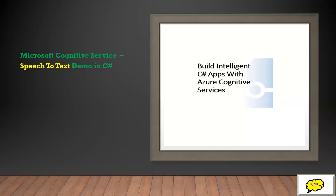Cognitive Services brings AI within reach of every developer and data scientist. It has a couple of leading models and a variety of use cases you can unlock. All it takes is an API call to embed the ability to see, speak, understand, or translate, and take decisions on apps or files in your applications. These Azure Cognitive Services convert text to speech for more natural interfaces, support speech translation, real-time speech translation, and speaker recognition to identify and verify people speaking based on audio.